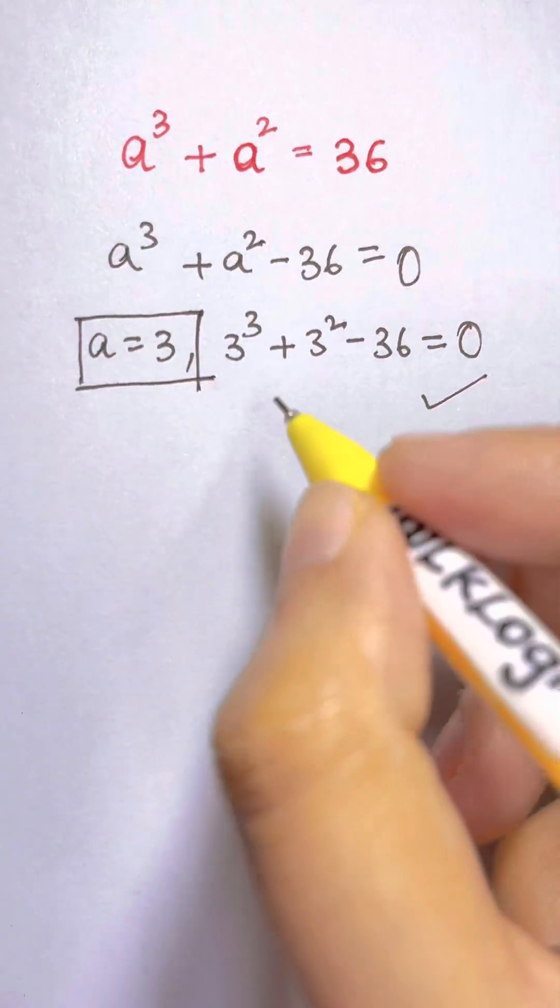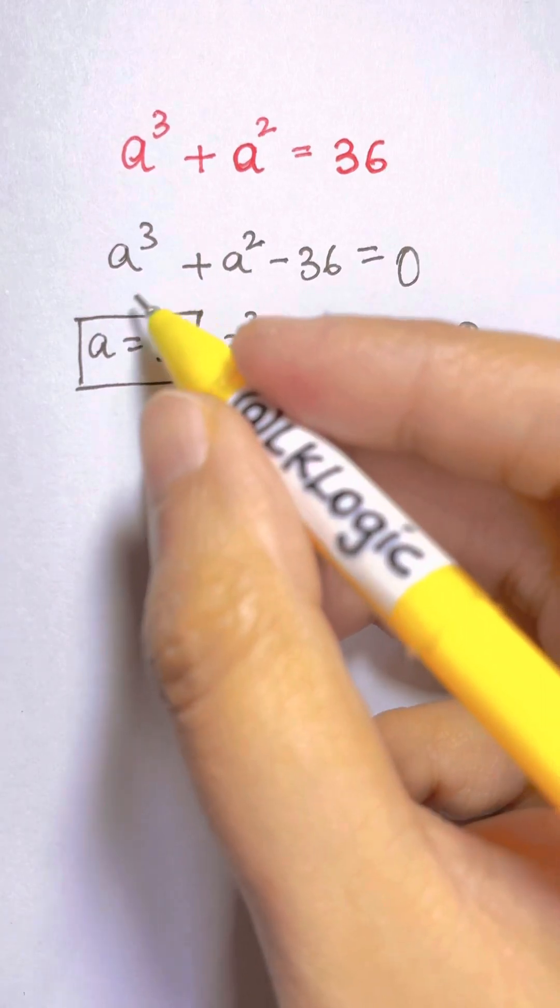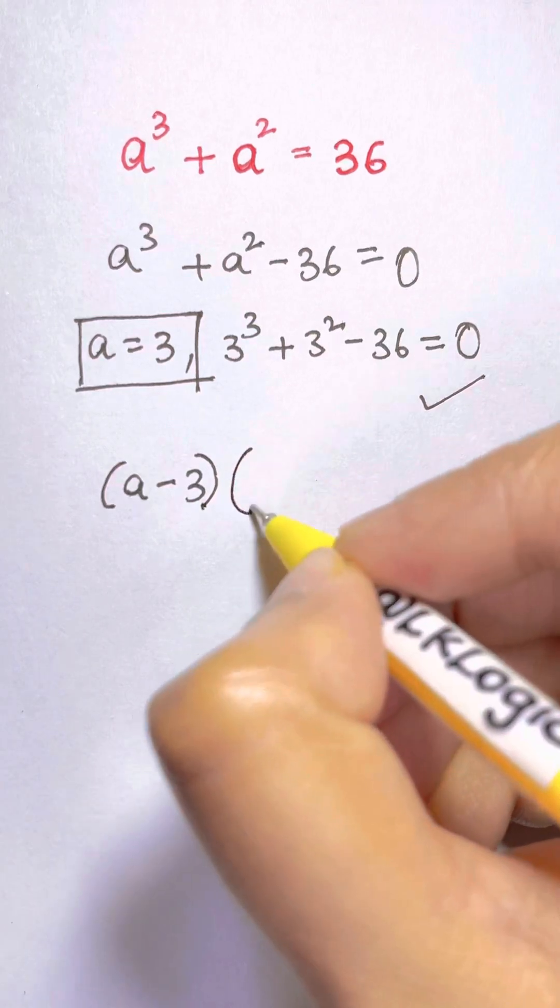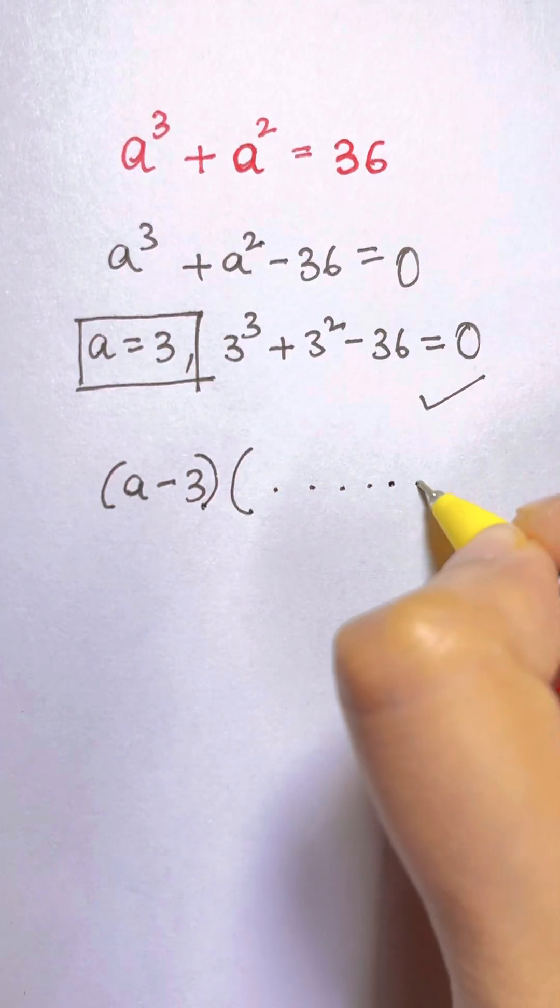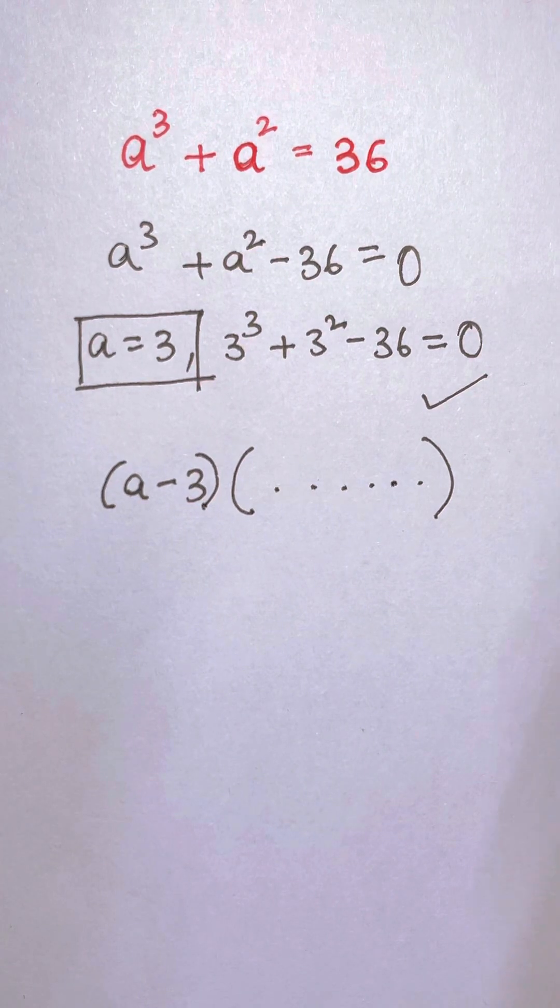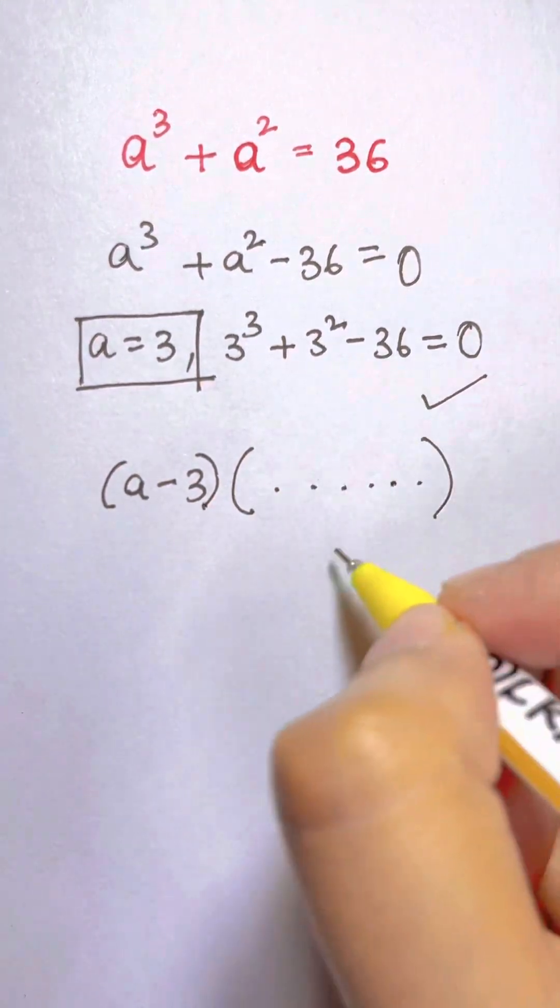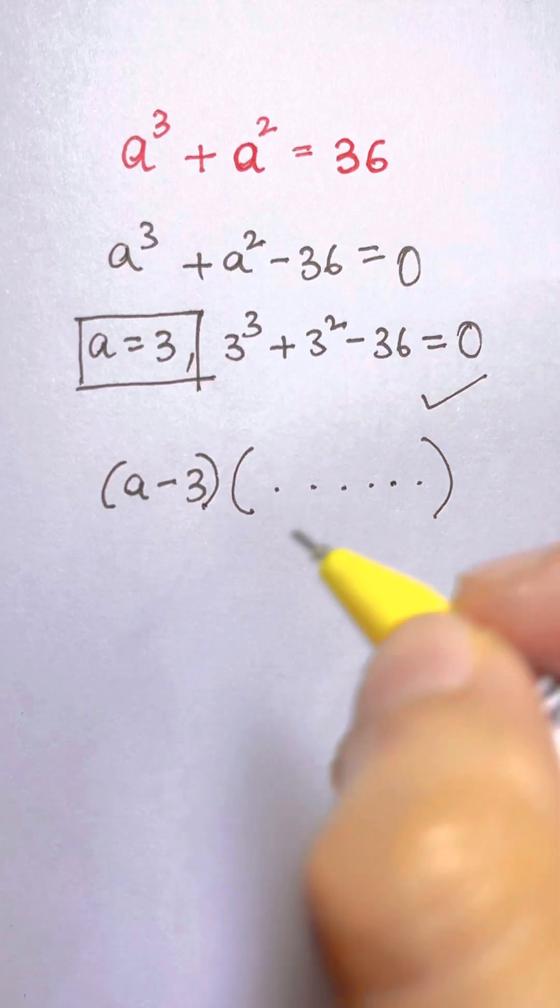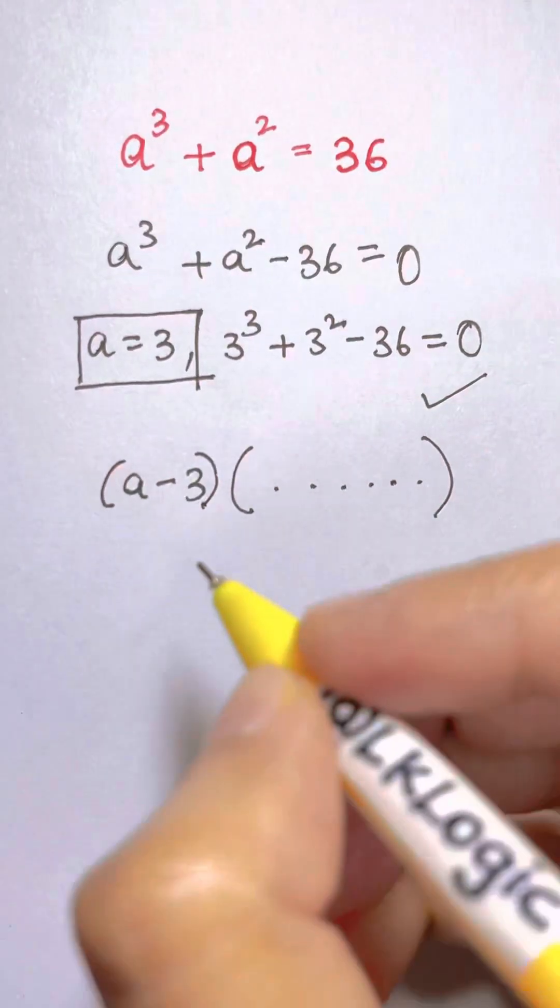Now we are going to write it in the form of a factor. That is a - 3 times something. Now how will you find out what is this? So first, what we are going to do is, I am going to write it back.